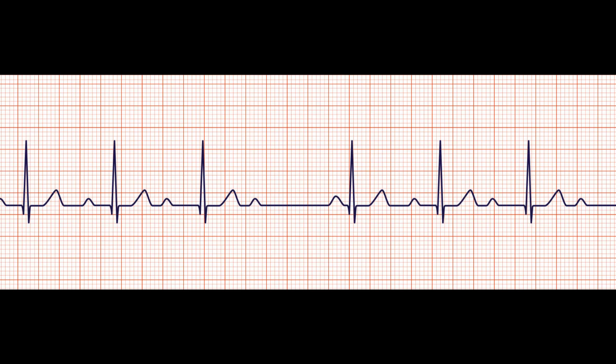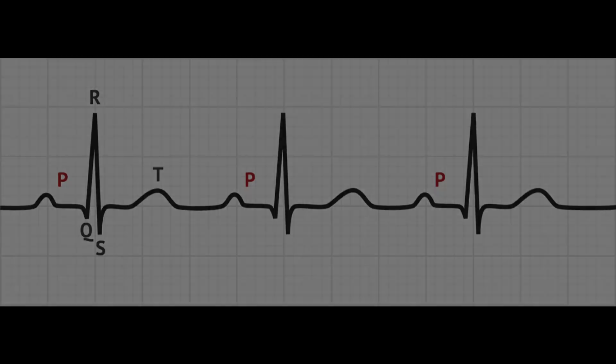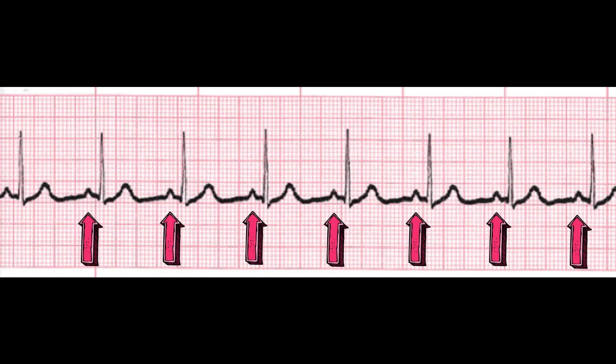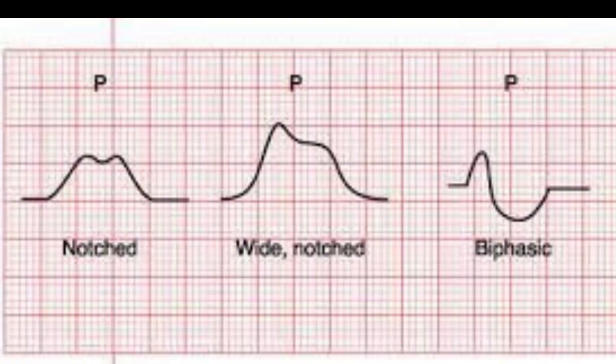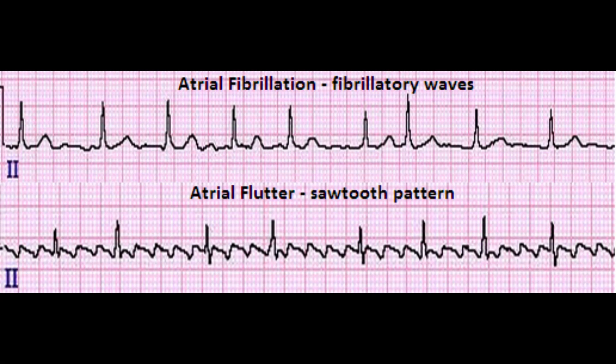The timing of P-Waves is also important. In a normal sinus rhythm, P-Waves should be regular and occur at a consistent interval. If the P-Waves are irregularly spaced or show varying morphology, such as varying shapes and forms, this may indicate an arrhythmia such as atrial fibrillation or flutter.